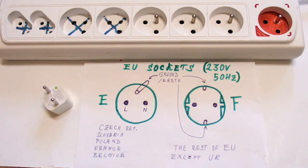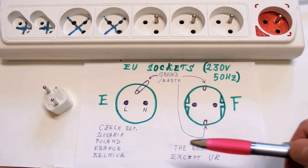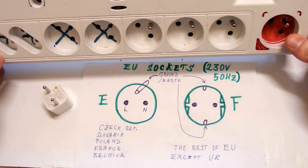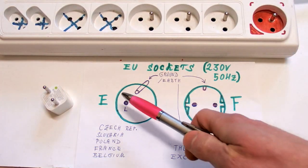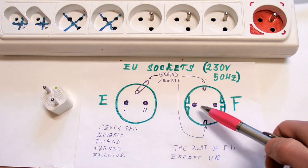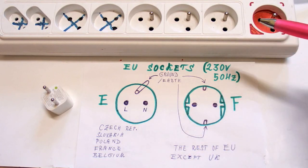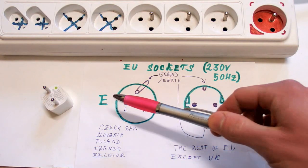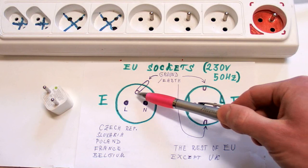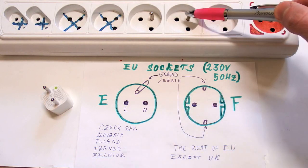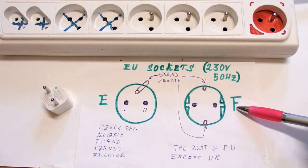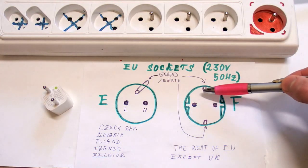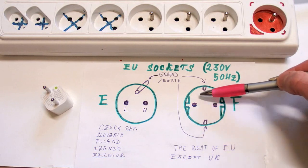By and large, Europe is using two different kinds of sockets. Both are kind of similar, they are a round shape, hollow, like this one. And they have two holes for live and neutral. But the difference is how they are grounded. The first version, so called French style or E-type socket has a ground pin, like this one. And there is also F style or German style, which instead of a ground pin has two ground contacts at the top and bottom.